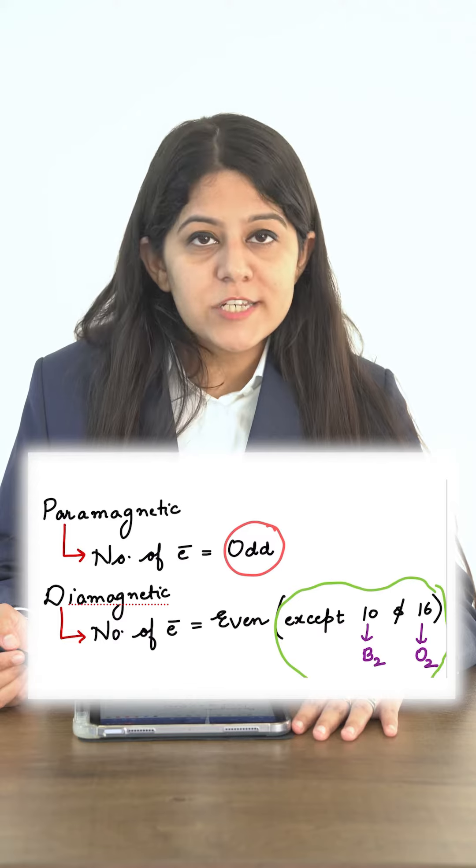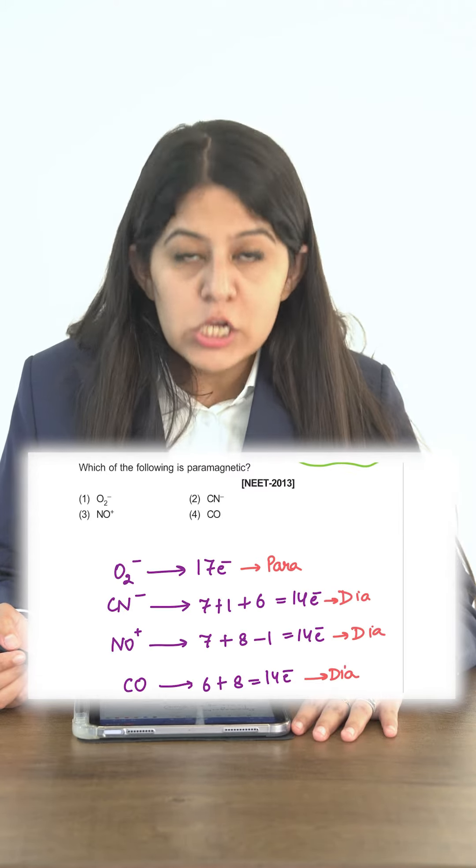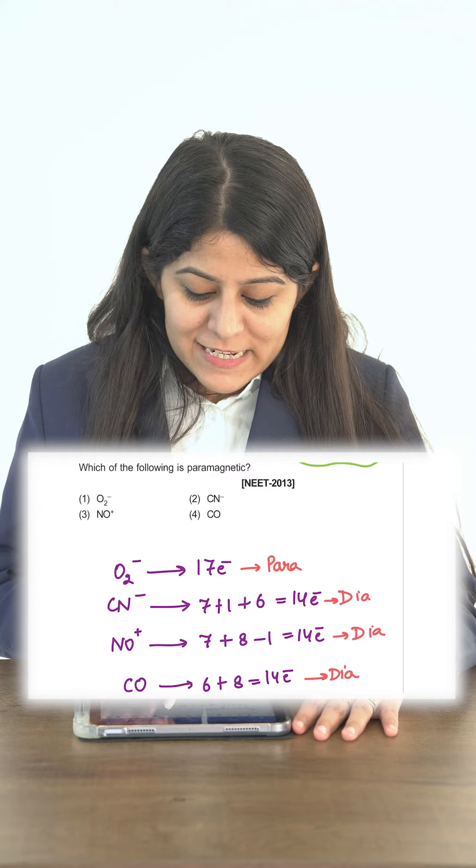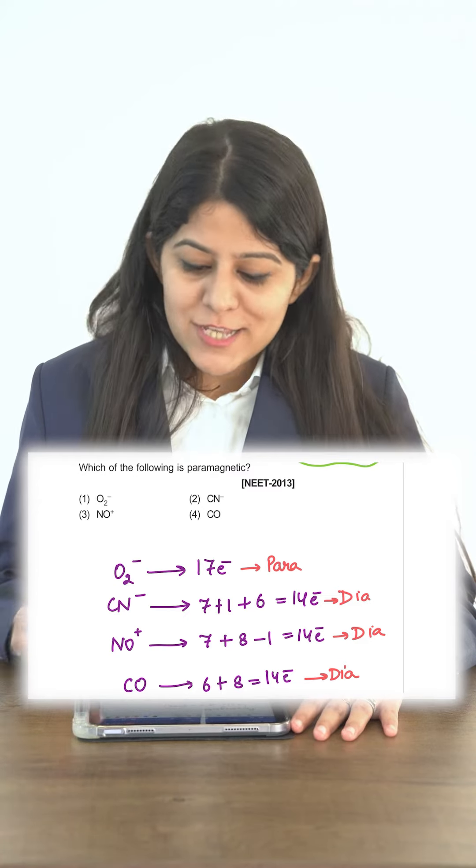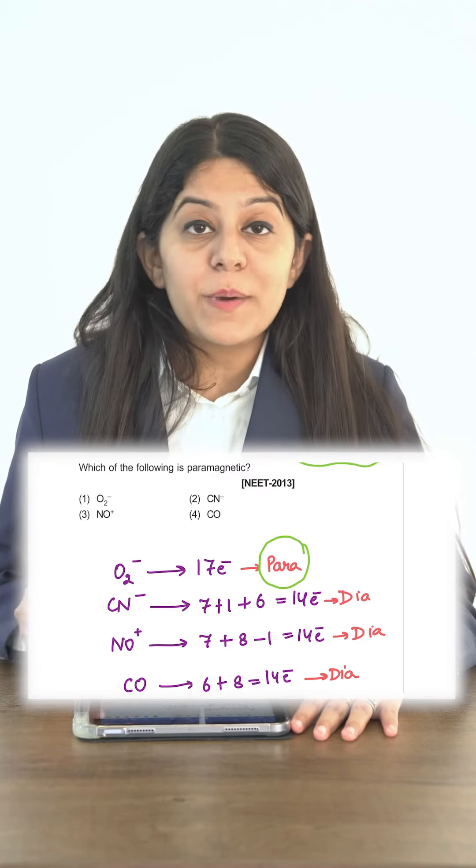Now let's solve a question. Which of the following is paramagnetic? So O2 minus, 17 electrons, odd number of electrons. So yes, this is our answer that it is paramagnetic in nature.